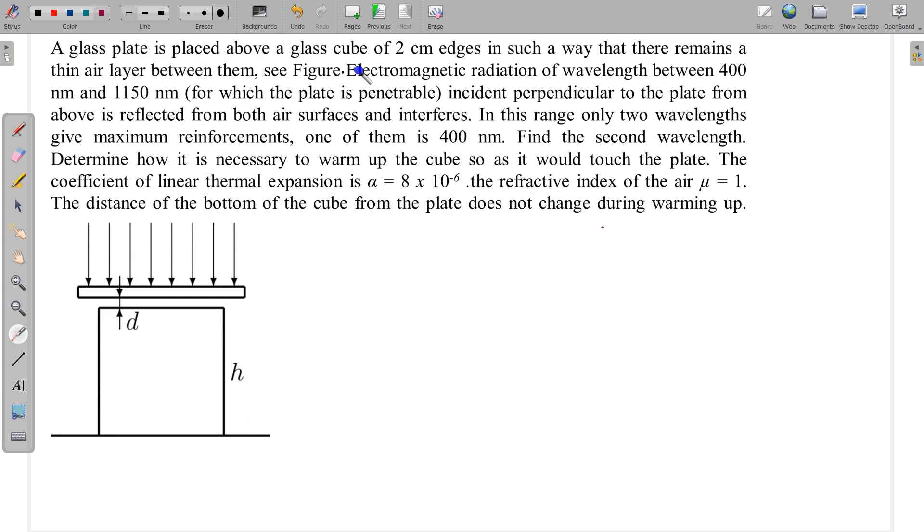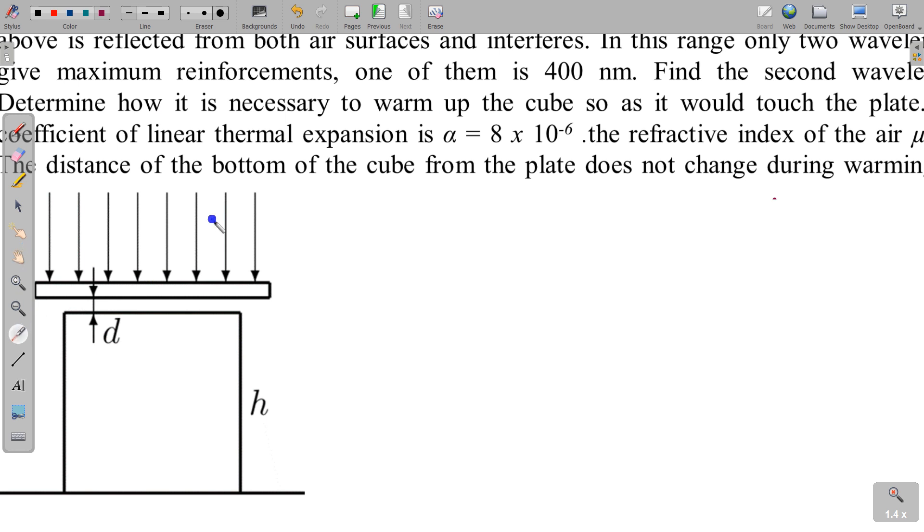In this question, a glass plate is placed above a glass cube of 2 cm in such a way that there remains a thin air layer between them. Electromagnetic radiation of wavelength between 400 nanometer to 1150 nanometer, for which the plate is penetrable, is incident perpendicular to the plate from above and is reflected from both air surfaces and interferes. So let us first understand this. These are the reflections - one reflection from this interface glass to air and one reflection from this interface which is air to glass.